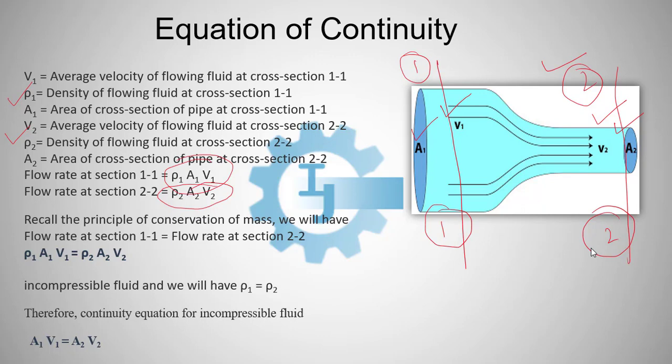So, if we recall the principle of conservation of mass, we will have flow rate at section 1-1 must be equals to flow rate at section 2-2. So, rho 1 A1 V1 equals to rho 2 A2 V2.